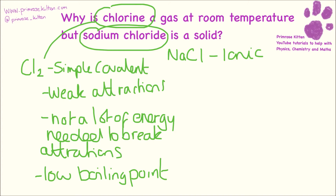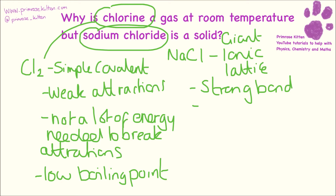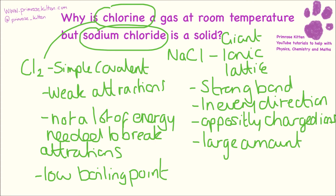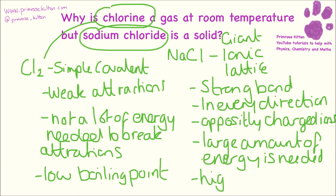Sodium chloride, on the other hand, is a giant ionic lattice. It has strong bonds — you could also write that it has a strong electrostatic attraction — and these bonds act in every direction, not just from the ion that gave or received the electron, but to everything around it. These strong bonds are between oppositely charged ions, and because of them, a large amount of energy is needed to break the bonds, so it is going to have a high boiling point.